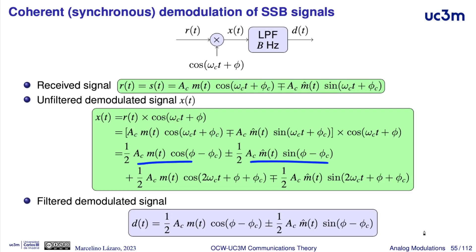At the output of the receiver we have the addition of two baseband terms. One term is proportional to the modulating signal times a cosine of the difference between the receiver phase phi and the carrier phase phi_c — the same term that appears in double sideband modulation. But we also have an additional term that is not proportional to the modulating signal but to its Hilbert transform, and this is an interference. This term is multiplied by the sine of the difference between phi and phi_c.